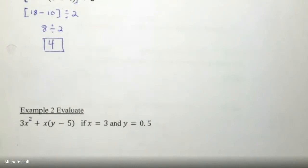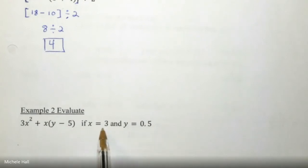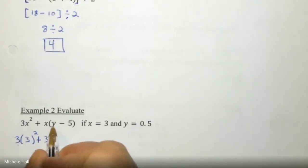Example 2. I am asked to evaluate 3x² + x(y - 5) if x equals 3 and y equals 0.5. I need to substitute those things in. I have 3 times x is being squared, x is 3, plus x is 3 times y which is 0.5, subtracting 5.